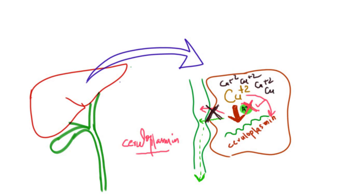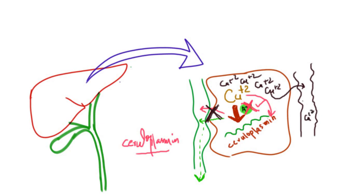As a result of this accumulation, some of the free copper finds a way out of the hepatocytes into the small blood vessels flowing adjacent to the hepatocyte. As a result, free copper — which was normally absent in the blood — will now be present in the blood, and that too in large quantities.